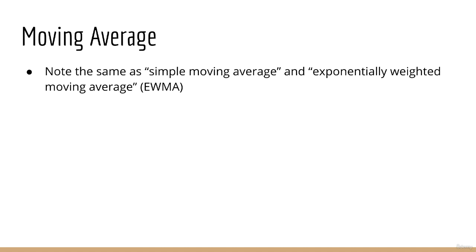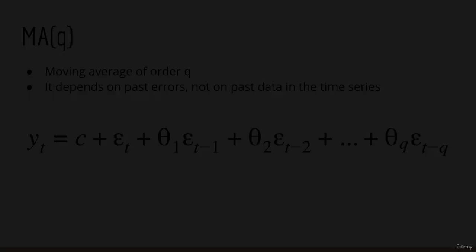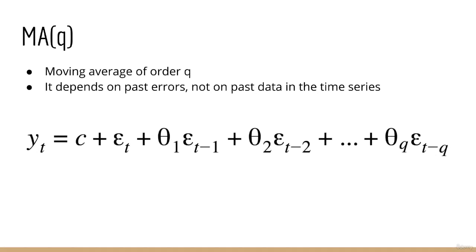So let's get right to what the moving average model looks like. The moving average model is similar to the autoregressive model in that it is a linear function of something. But what is it a linear function of? In fact, it is a linear function of past error terms.